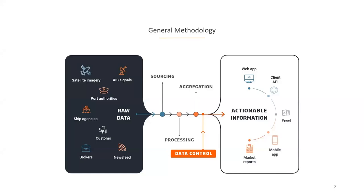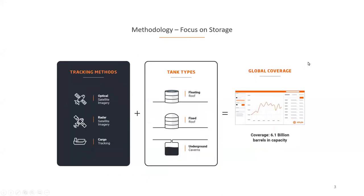The information that we deliver to clients — we want to make sure that it makes sense to commodity professionals. This is why many of our data analysts controlling the data actually come from the market. Now if we have a closer look at how we get figures regarding crude oil onshore inventory, it's a bit more specific. We will rely on three main sources: satellite optical imagery, satellite radar imagery, and cargo tracking data.